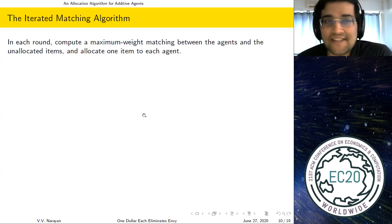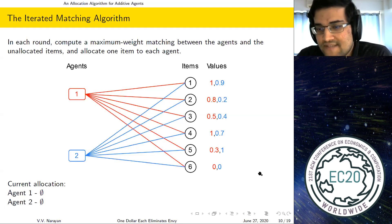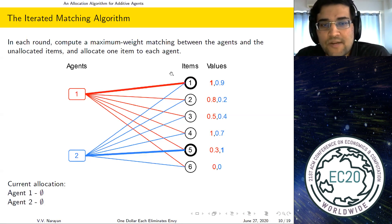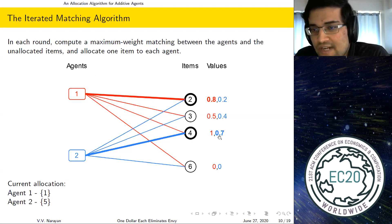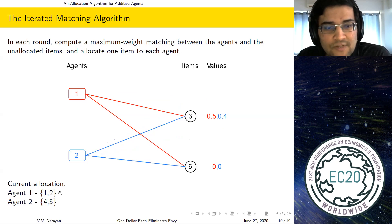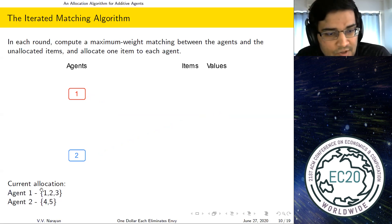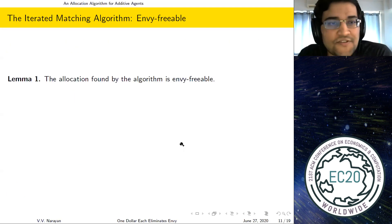Our algorithm for the additive case is very simple. In each round, it computes a maximum weight matching between agents and unallocated items, and allocates one item to each agent. In the example with two agents and five items, we first add a dummy item (value zero for all) to make the item count a multiple of the agent count. Round one: agent one is matched to item one, agent two to item five (both value one). Round two: agent one to item two, agent two to item four — this 0.8+0.7 matching is maximum weight, even though agent one values item four at one. Round three: agent one gets item three, the dummy item is discarded. Final allocation: agent one gets items one, two, three; agent two gets items four, five.